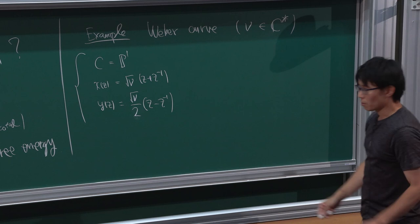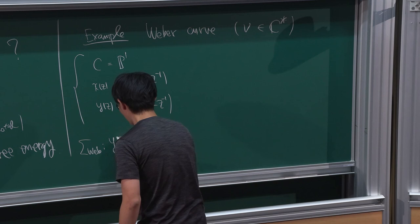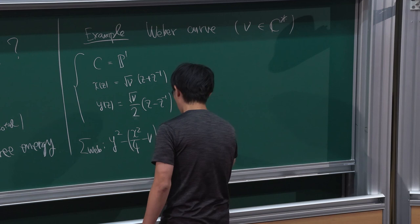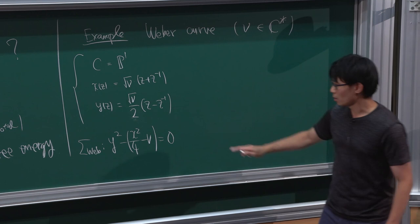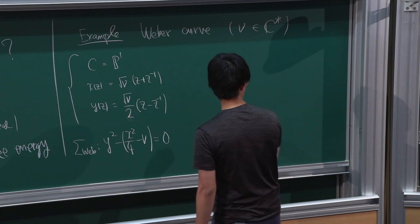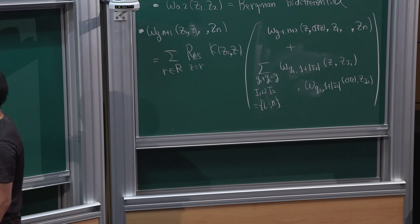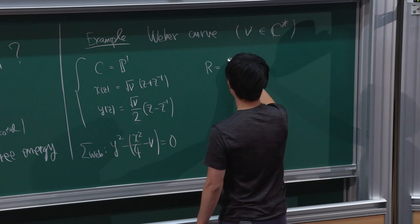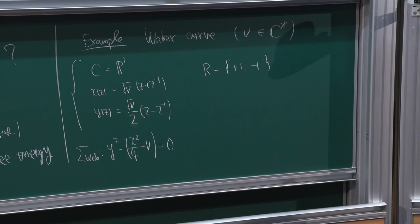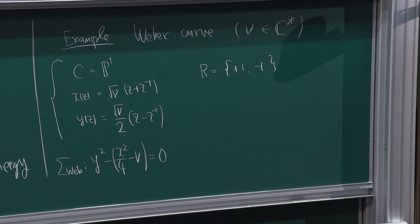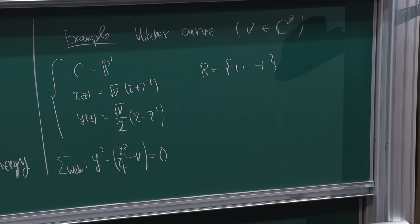This is a parameterization of the Weber curve defined by the algebraic equation. We call it the Weber curve because it is the classical limit of the Whittaker-Weber equation. In the context of matrix models it is known as the Gaussian spectral curve. To apply topological recursion, we take residues at points where dx vanishes — the critical points of x — which in this case are located at plus or minus 1. One also has the covering involution sigma(z) = 1/z.